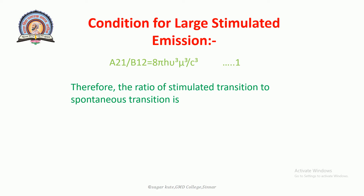Therefore, the ratio of stimulated transition to the spontaneous transition is R = stimulated transition / spontaneous transition. Stimulated emission and spontaneous emission were discussed in the last lecture. Spontaneous transition means an atom at the upper level can decay spontaneously to the lower level and emit a photon of frequency hν. If the transition is between E2 and E1, this photon has a random direction and phase.